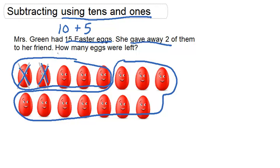And now it's pretty easy to see how many eggs are left, because we know we still have the whole group of 10 eggs left, and then we have these 3 left in the group of 5.